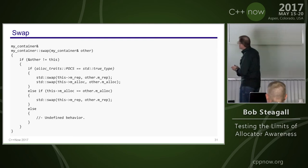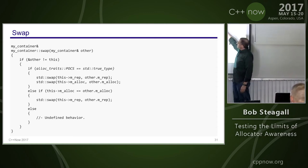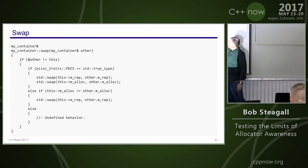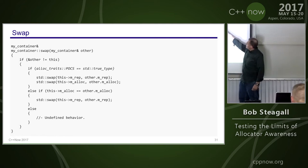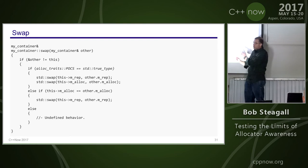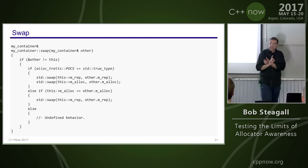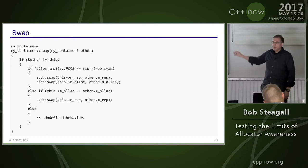Swap is simpler than move assignment. If propagate_on_container_swap is true_type, swap the representation and swap the allocators. If the trait is false but allocators are equal, swap the reps since equal allocators permit that. If the trait is false and allocators are unequal, that's undefined behavior — you cannot guarantee after the swap that iterators are still valid.